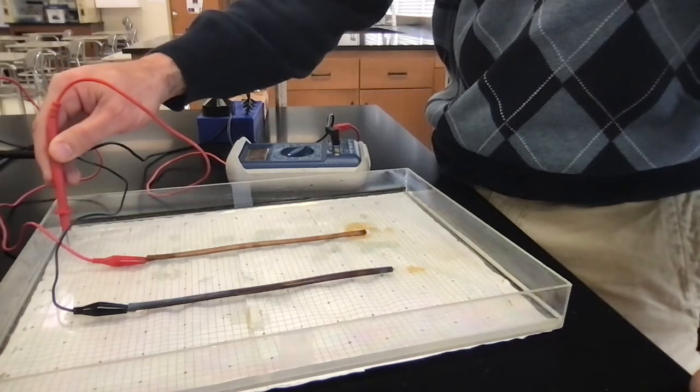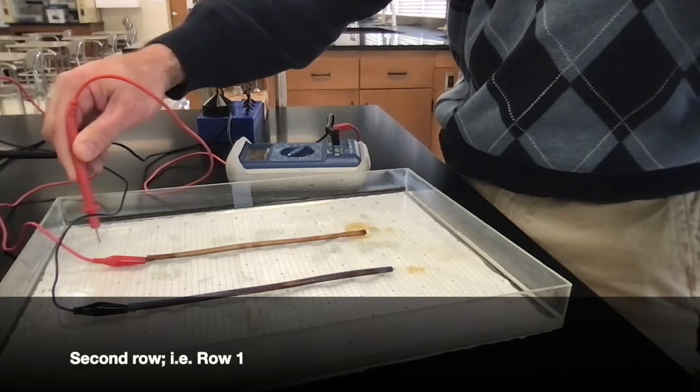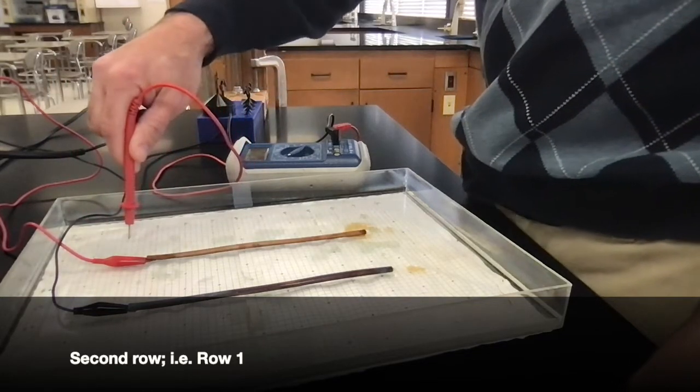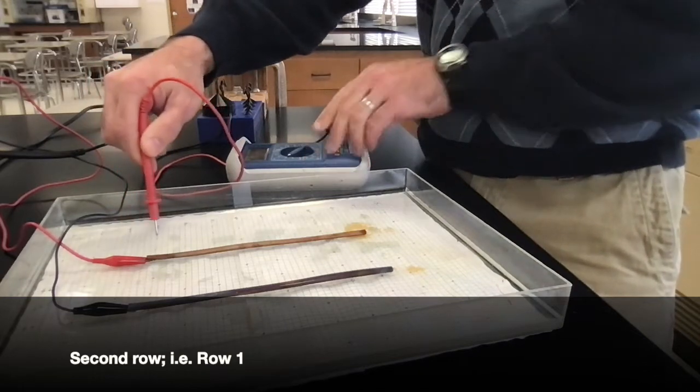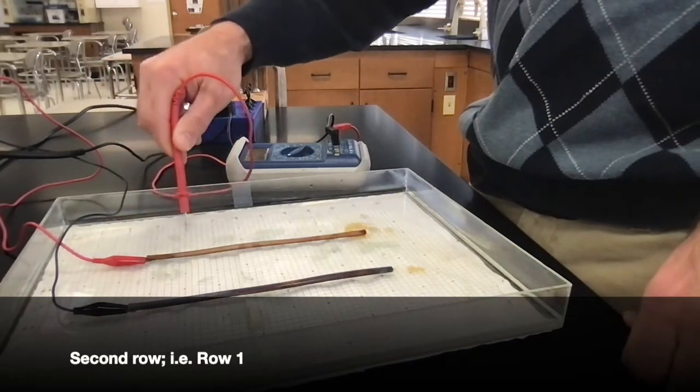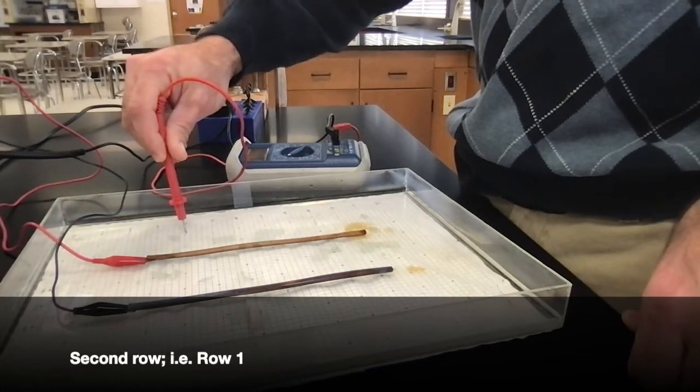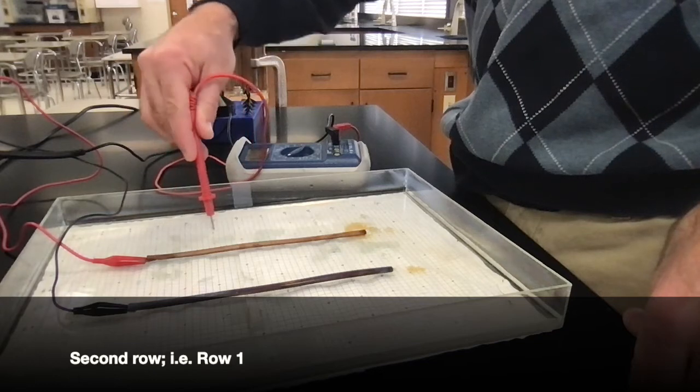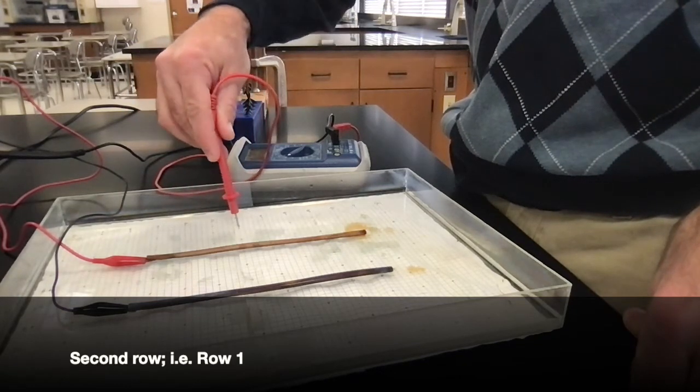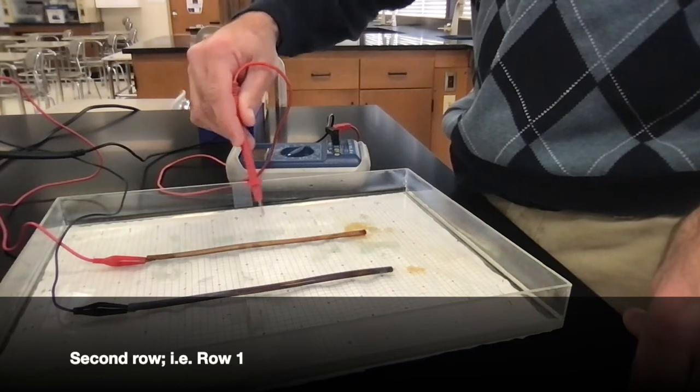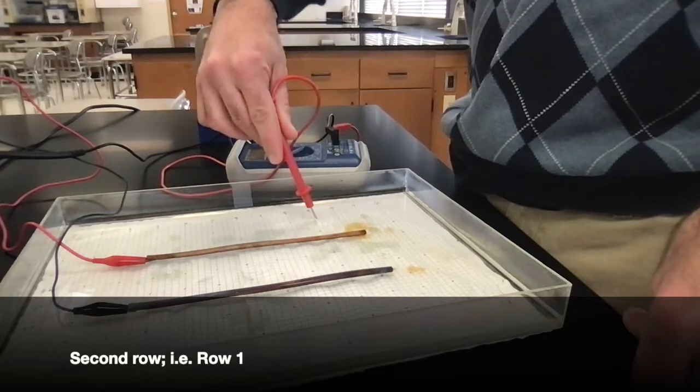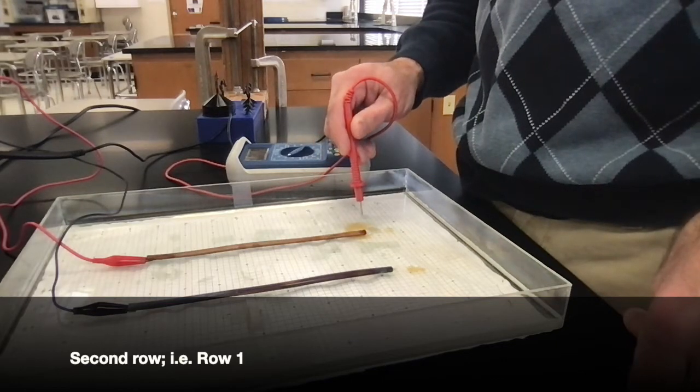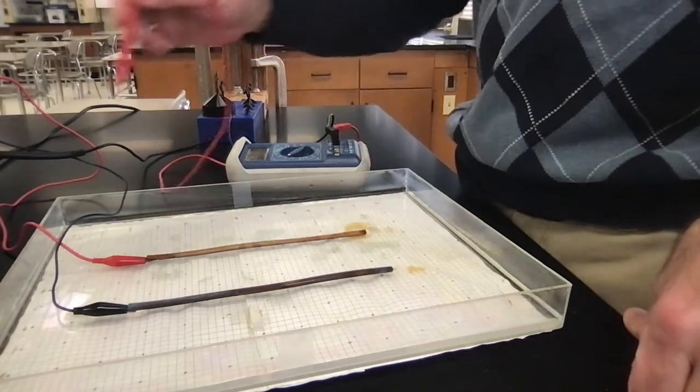Row 1: 0.1 is 7.8, 1.1 is 8.1, 2.1 is 8.3, 3.1 is 8.8, 4.1 is 9.3, 5 is 9.2, 6 is 9.4, 7 is 9.4, 8 is 9.5, 9 is 9.4, 10 is 9.2, 11 is 8.9, 12 is 8.5, 13 is 8.2.